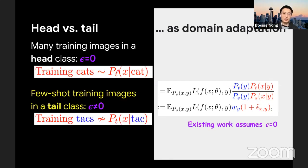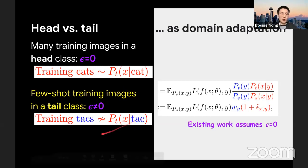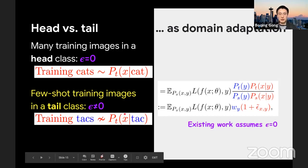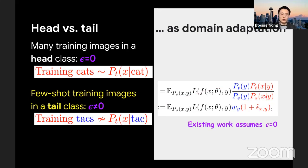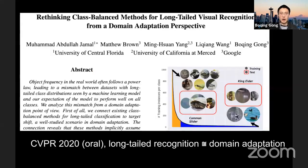So in the head classes, given a class cat, the conditional distribution probably can be well represented by a lot of training images because you have a lot of training images in a training set. Maybe it's okay. But for the tail classes, given a class tag, for example, it's really hard to get enough training images to well represent this tail class. So it's really hard, therefore, to assume these two are the same.